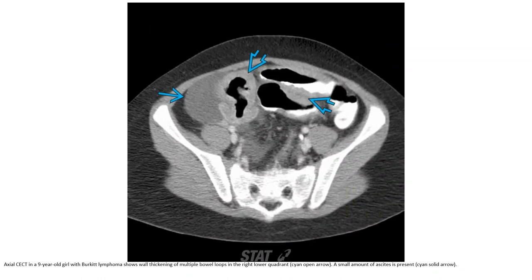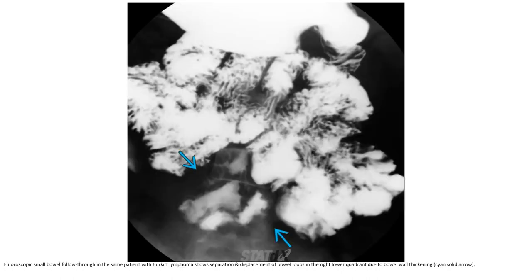Contrast-enhanced CT in a 9-year-old with Burkitt lymphoma shows circumferential wall thickening of multiple bowel loops in the right lower quadrant, with a small amount of ascites present. Fluoroscopic bowel follow-through in the same patient shows separation and displacement of bowel loops in the right lower quadrant due to bowel wall thickening.